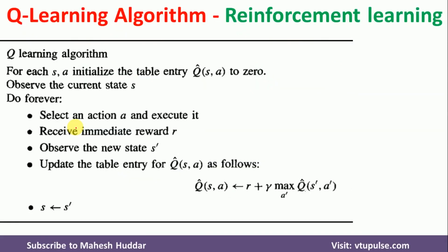This is how the Q-learning algorithm looks like. In the first step, for each state-action pair, initialize the table entry Q-cap of S,A to 0. That is, for each possible state S and possible action A, we need to create a table and set every entry to 0.